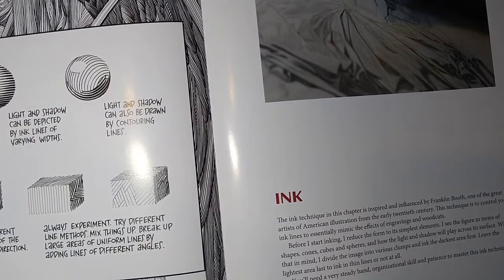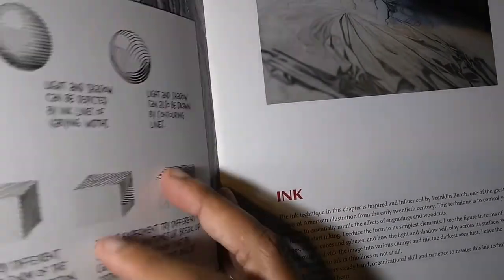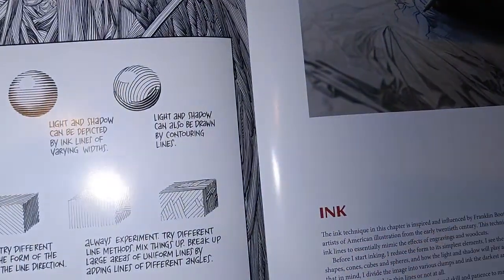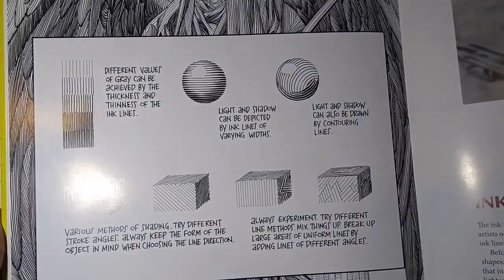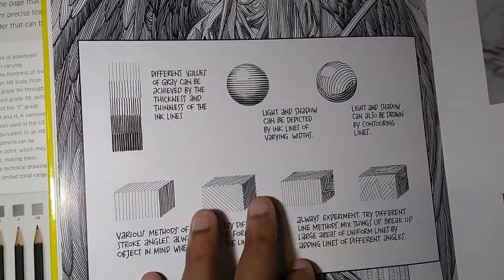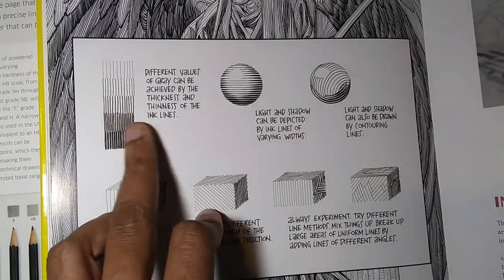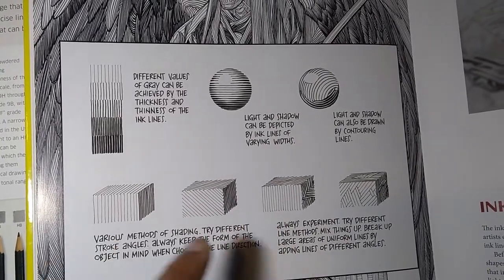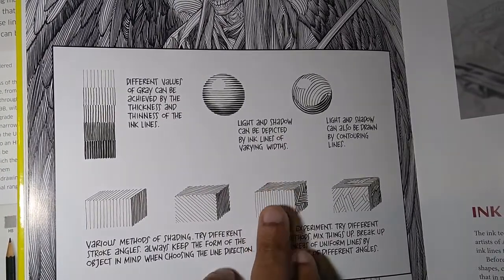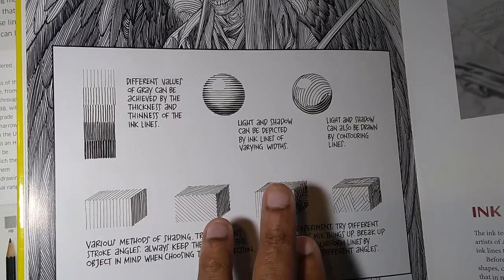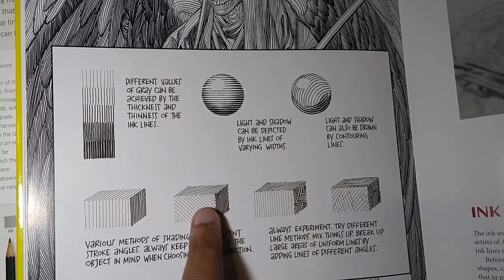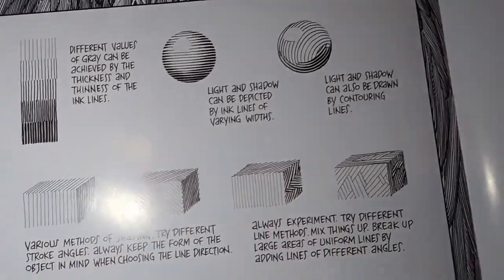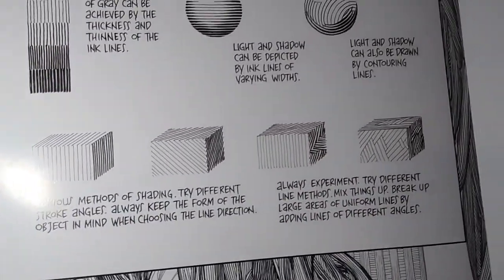This is a book by Frank Cho — 'Drawing Beautiful Women.' This is just an example of hatching and cross-hatching, mostly hatching, that he's creating with pen. This is to show you that you can do this with pen, pencil, or paint. He's creating different lines and combinations, using different thicknesses, or going over the same lines to create darker values.